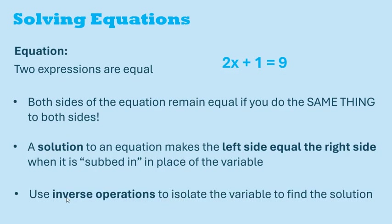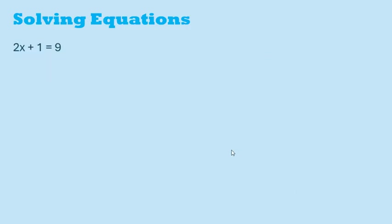The goal of algebra is to use inverse operations to isolate the variable to find the solution. Let's look at an example of how to actually apply these ideas. Here we want to find the solution. In other words, we want to find which number in place of x would make both sides equal. So we want to isolate x and get it by itself on one side of the equation to allow us to find the solution.